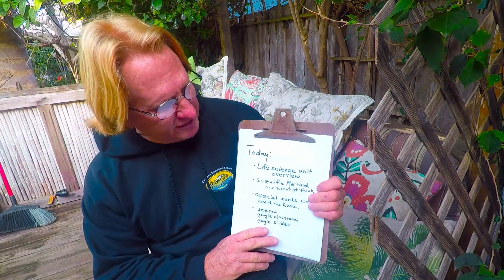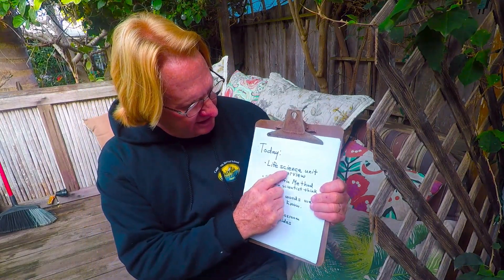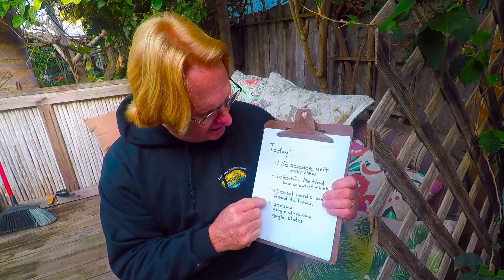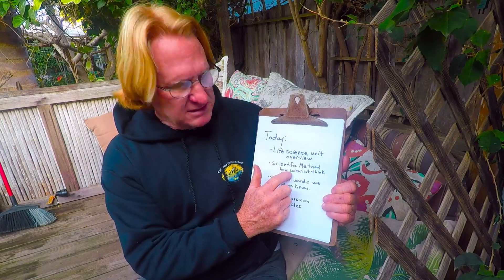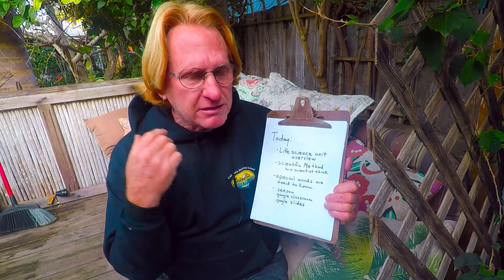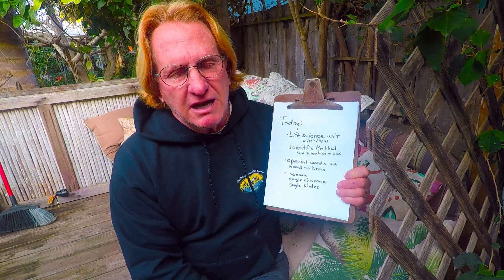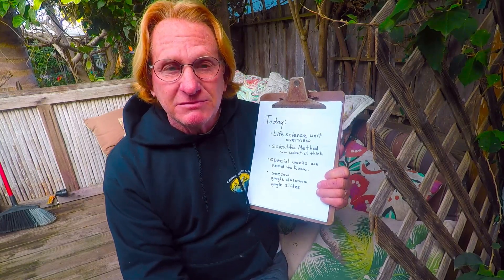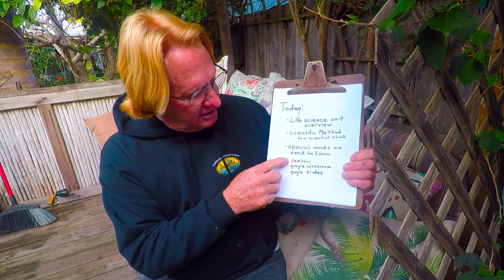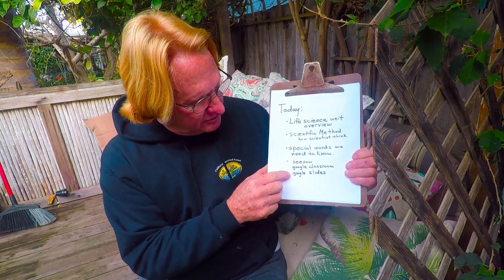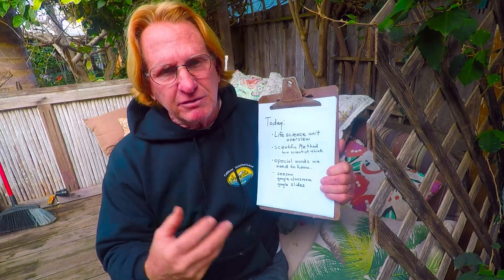Let's go over what we're going to cover today. We're going to cover the life science unit and give you an overview of what we're going to study. We're going to go over the scientific method — basically how scientists think, how they put their mind and thoughts together, create their experiments, and see whether or not things are working. And then we have some special words you'll need to know, and we'll explain how Seesaw, Google Classroom, and Google Slides will work together to help you learn.